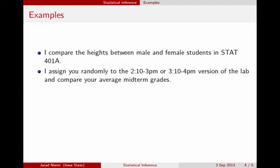If I take all the students in this class and randomly assign them to a time slot for lab — say a 2 o'clock version versus a 3 o'clock version — and then look at midterm grades, I can make a causal statement because I've randomly assigned the lab treatment. However, I cannot infer this to any larger population because I have not randomly selected the students.